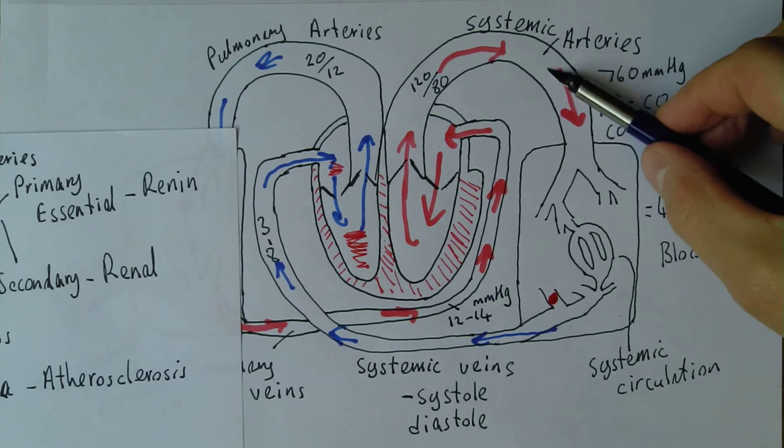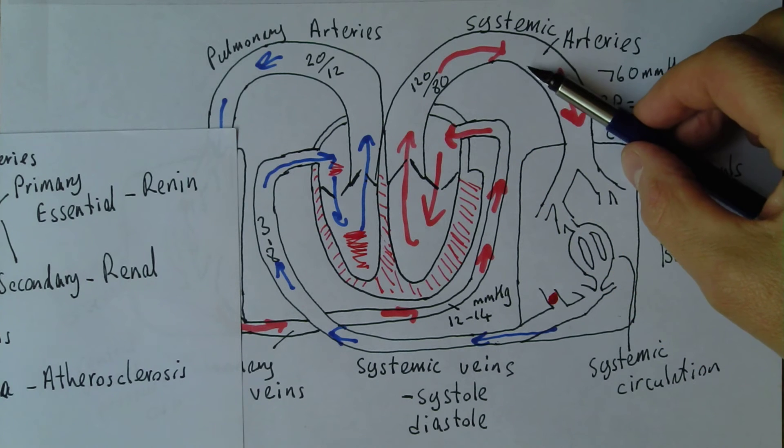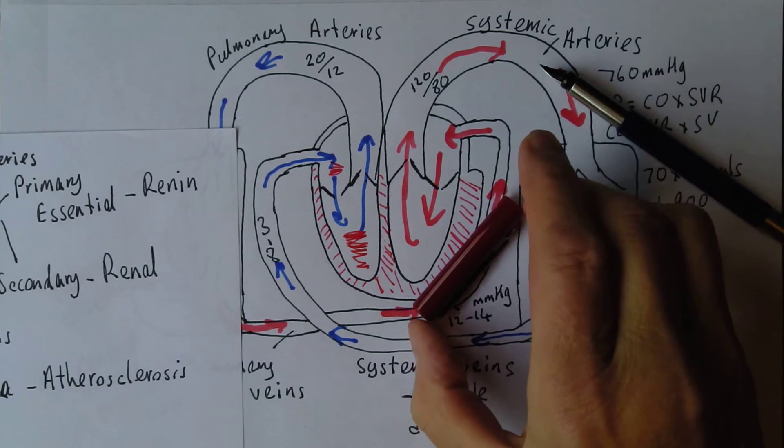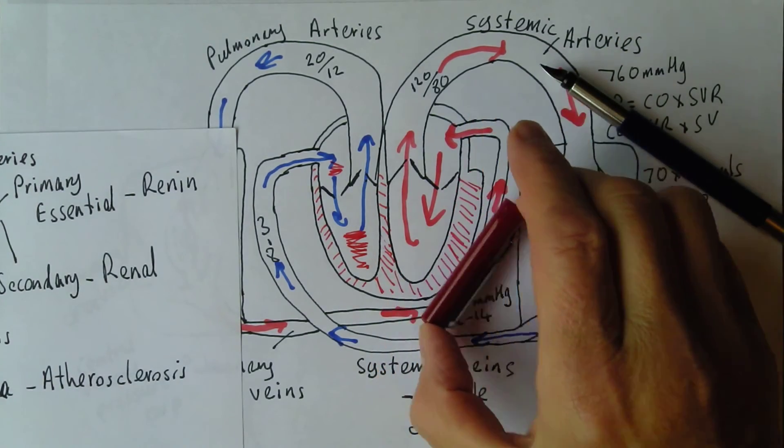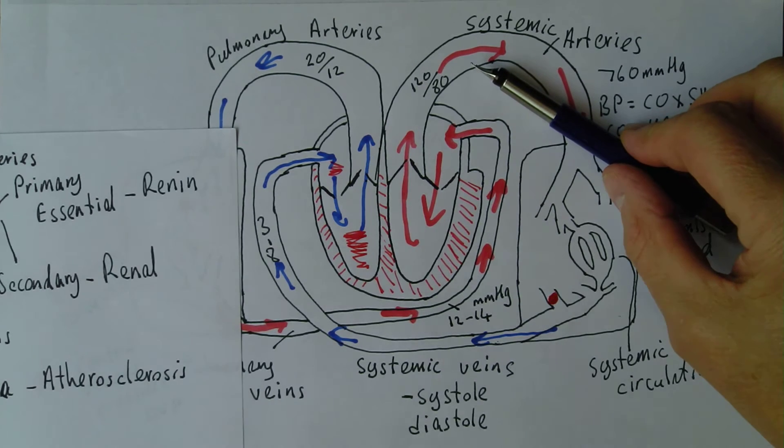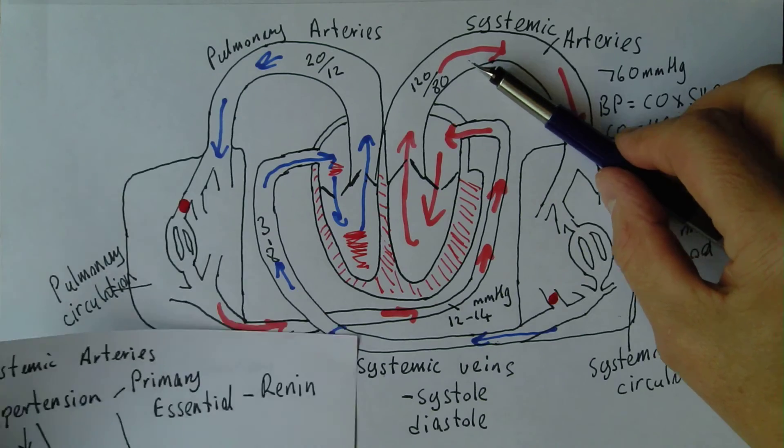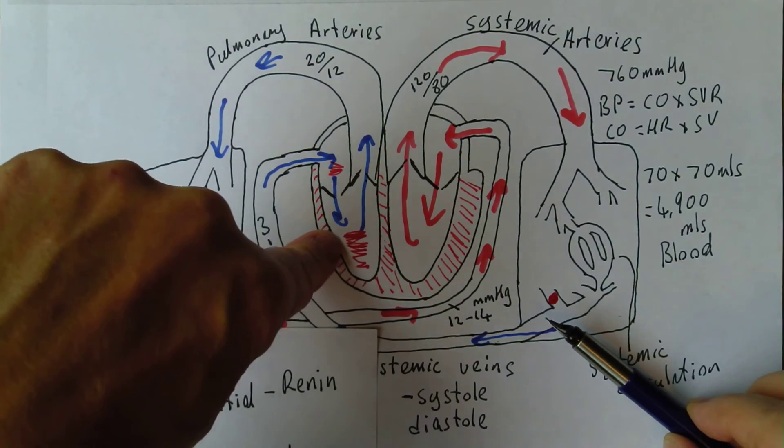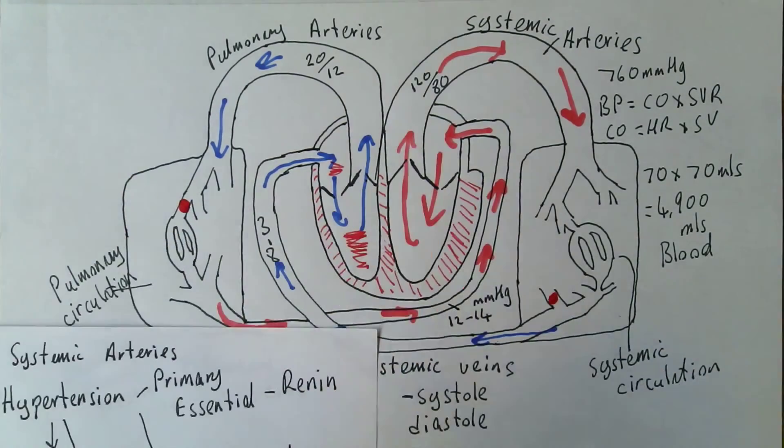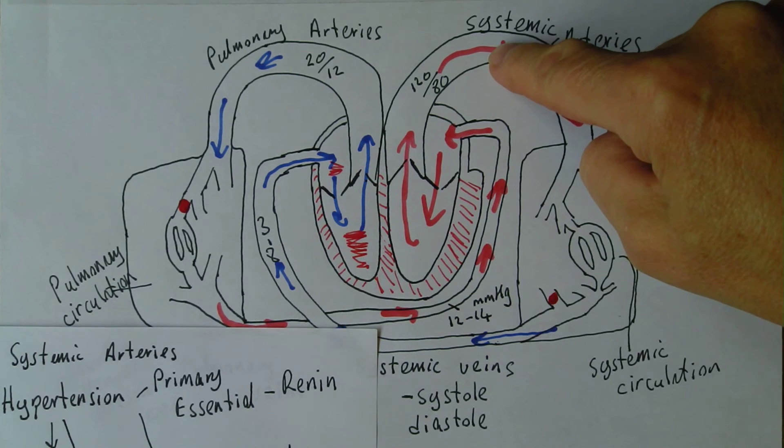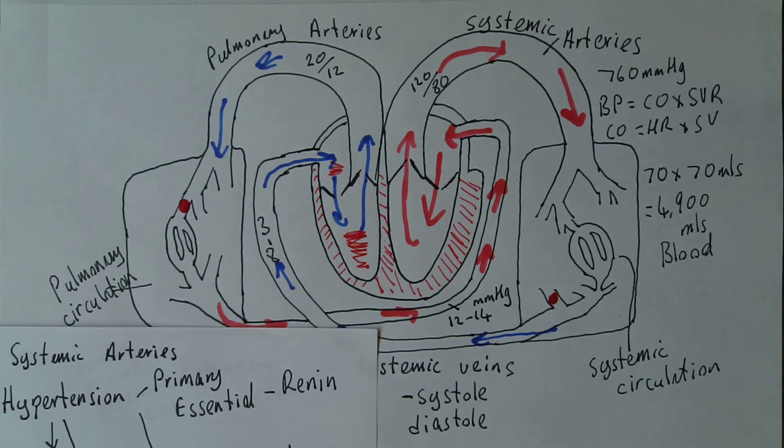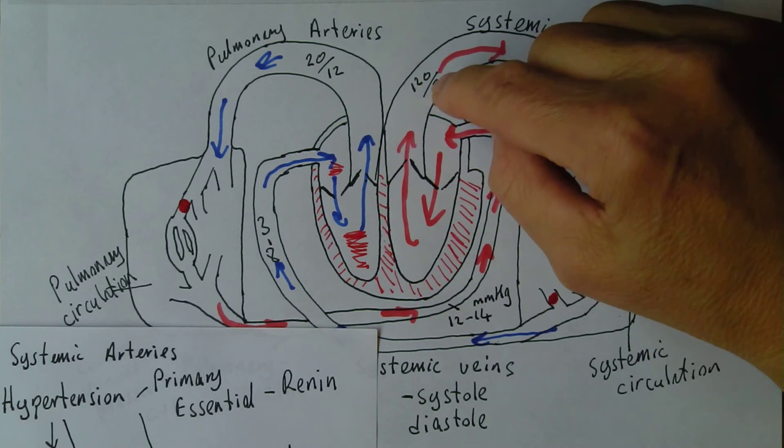If the pressure in the systemic arteries is high, can you see that means it's going to be harder for the left ventricle to contract, to pump the blood out against the increased outflow resistance. There will be an increased afterload. It was the same with the pulmonary arteries. When there was pulmonary arterial hypertension, that increased right ventricular workload. When there's systemic arterial hypertension, the left ventricle has to pump harder to pump the blood into the systemic arteries.